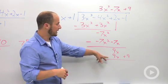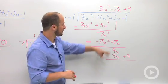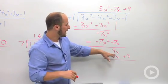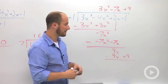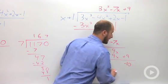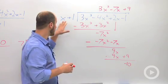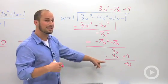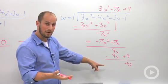9x minus 9x—those cancel. Negative 1 minus 9 is negative 10, which is the remainder. Nothing we multiply x by will give us negative 10.